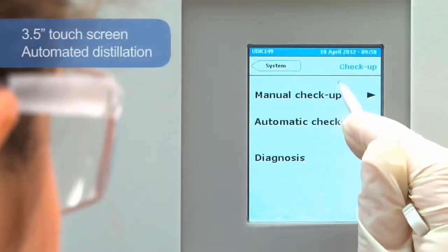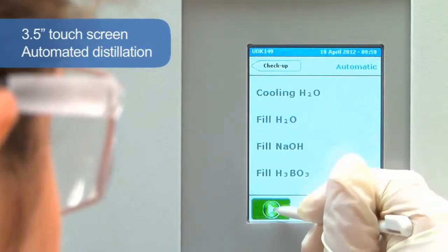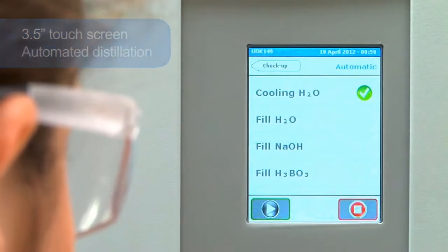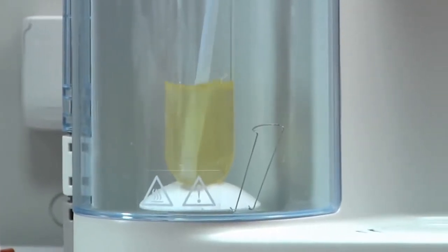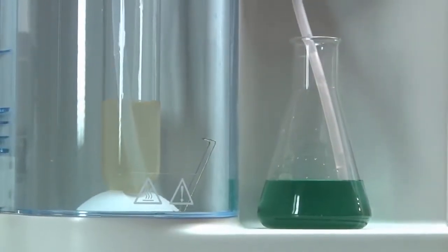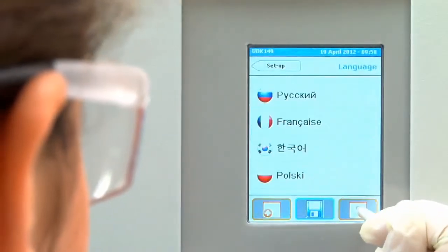With a 3.5-inch touchscreen color display, the UDK 149 achieves automatic distillation through alkali, dilution water and receiver solution addition, with pre-programmed distillation protocols and reaction times. It provides regulated steam output and conveniently automatic draining of sample residues. The most commonly used languages are pre-installed.